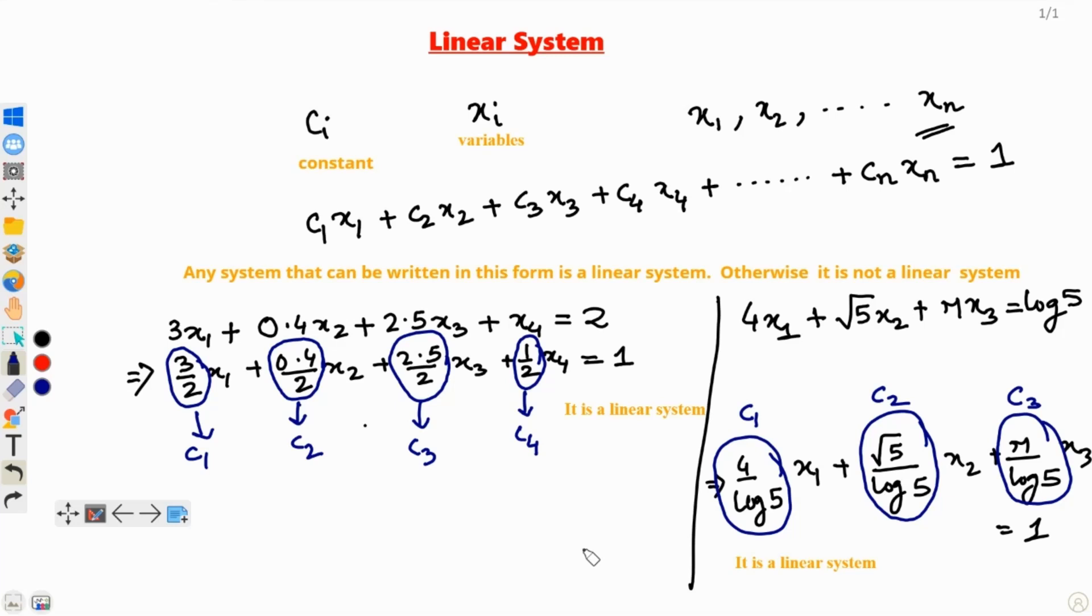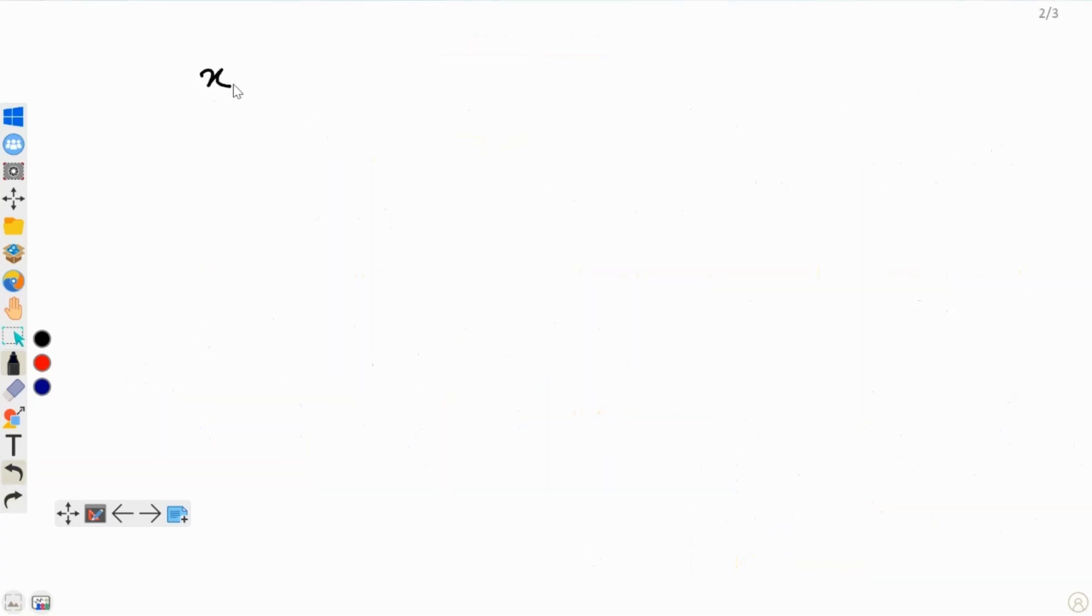Let us look at a few examples of what is not a linear system. If we had X1 times X3 plus 7.5X4 equals square root 2, observe that this would not be a linear system. This term right here is the troublemaker. X1 times X3 is not a linear term. You cannot write this equation in this generic definition equation form.